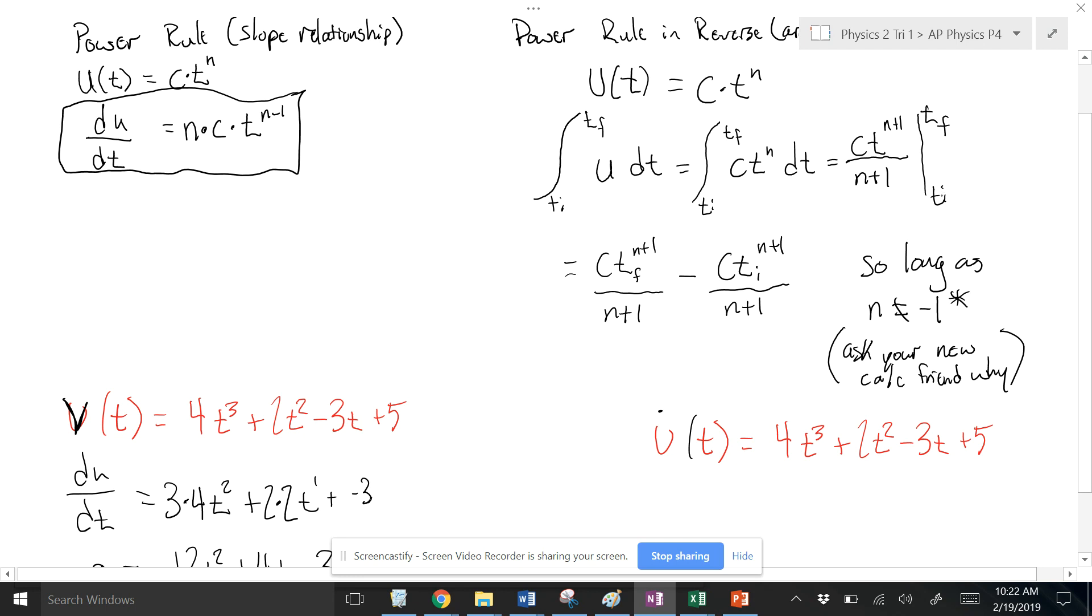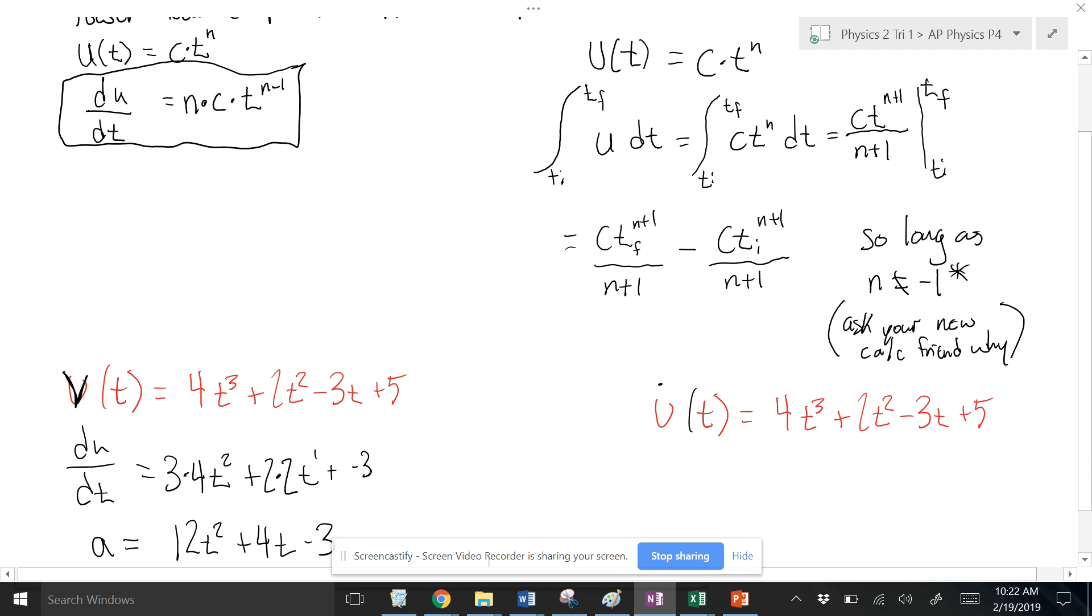And so then it just kind of works like when we're doing a time interval. Delta t is tf minus ti. And so you're basically plugging in tf to that new thing and subtracting ti to that new thing.